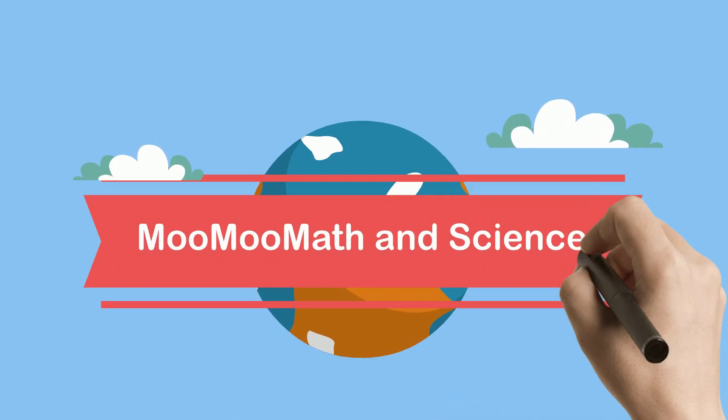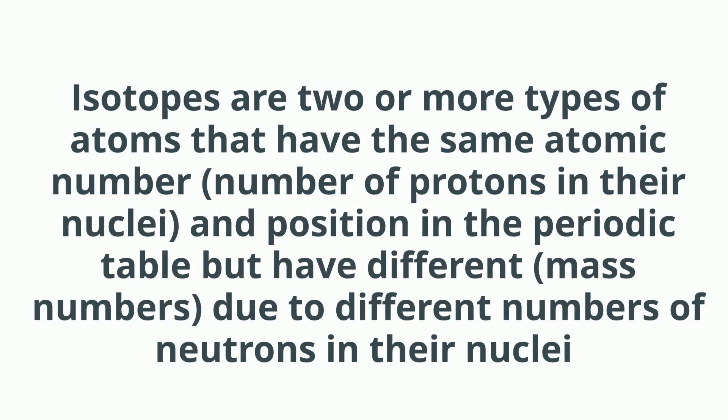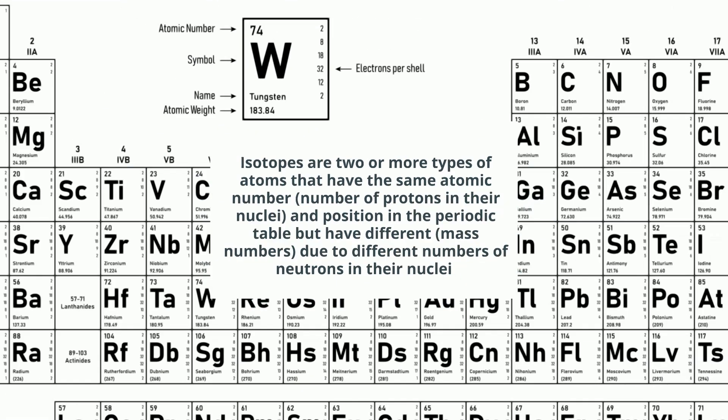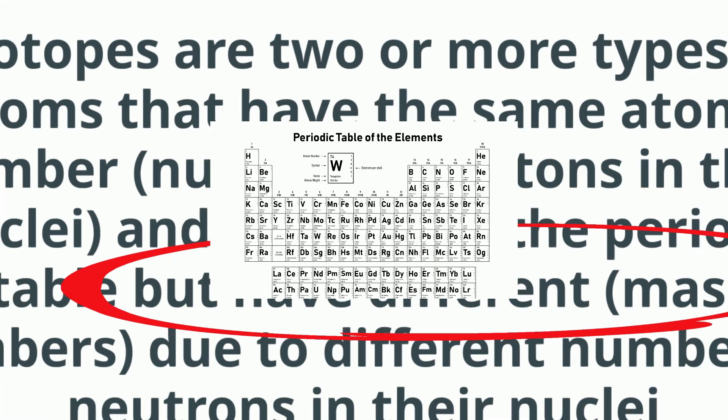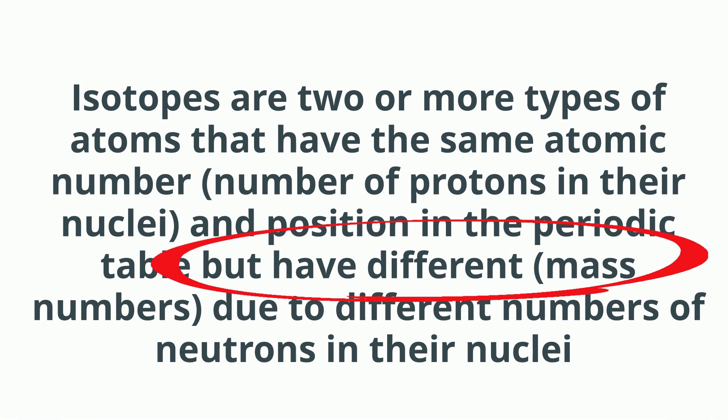Welcome to MooMooMath and Science and What is an Isotope? Isotopes are two or more types of atoms that have the same atomic number, which is the number of protons in the nuclei, and have the same position in the periodic table, but have different mass numbers due to a different number of neutrons in their nuclei.